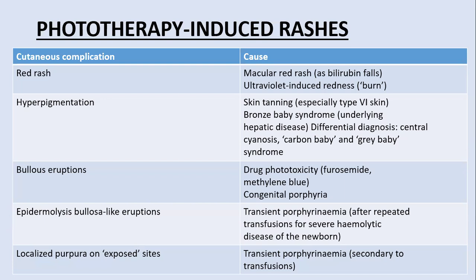As a result of phototherapy, the skin becomes hyperpigmented. This skin tanning is especially seen in infants born with type 4 skin. It is also known as bronze baby syndrome, which is due to underlying hepatic disease. Bronze baby syndrome has a differential diagnosis of carbon baby or gray baby syndrome, the term used for central cyanosis. Phototherapy may also cause bullous eruptions due to certain drugs, and they can mimic congenital porphyria.